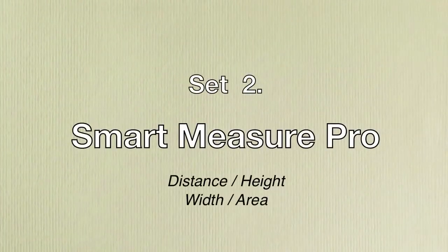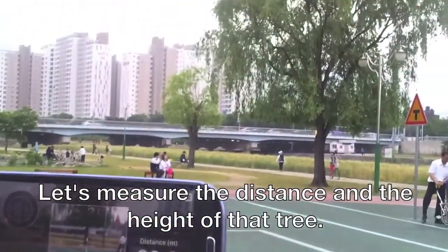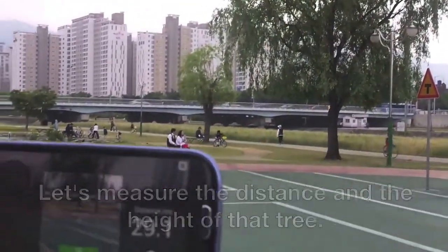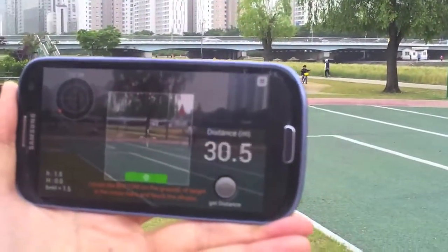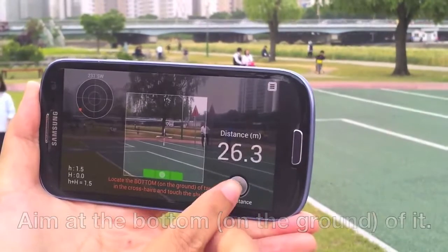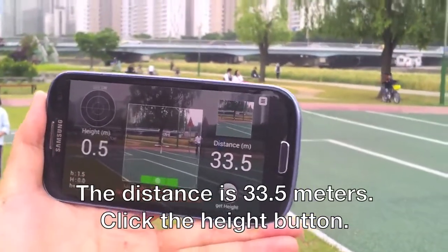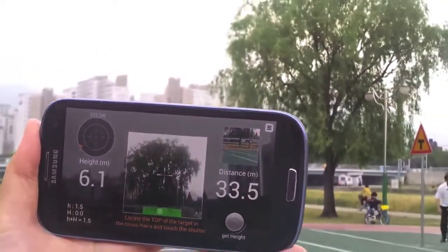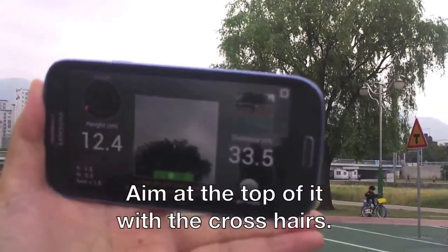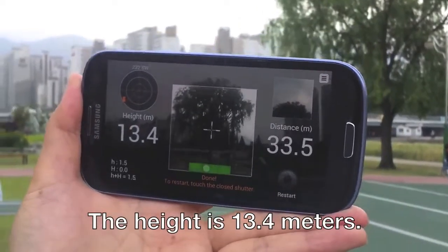Set 2: Smart Measure Pro. Hello, let's measure the distance and the height of that tree. Aim at the bottom of it. The distance is 33.5 meters. Click the height button. Aim at the top of it with the crosshairs. The height is 13.4 meters.